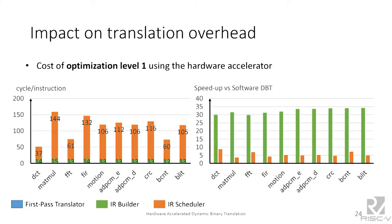For optimization level one: building the IR takes only 13 to 15 cycles per instruction to produce the 128-bit representation — around 30 times faster than software. Performing the scheduling needs around 100 cycles per instruction, giving only a 5x speedup over software, making it still the main bottleneck. So all the work done designing the intermediate representation leads to only a 5x speedup for scheduling, which remains the primary bottleneck of the process.